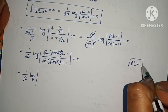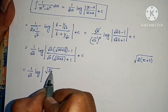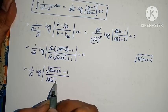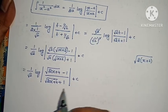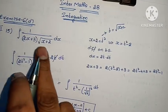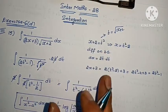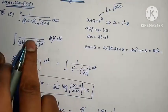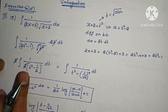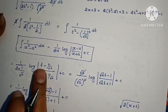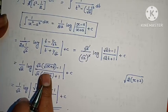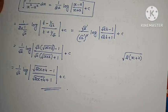Back-substituting t equals root of (x plus 2), we get root 2 by root 2 into (x plus 2) expressions. After simplification with LCM, denominators cancel and t equals root of (x plus 2) is substituted, giving the final answer for the first problem.